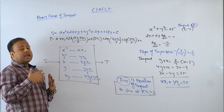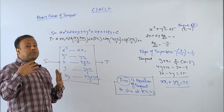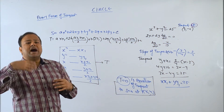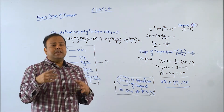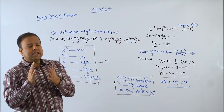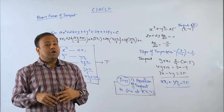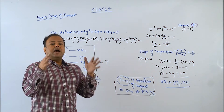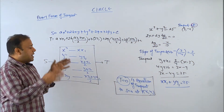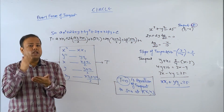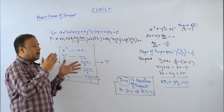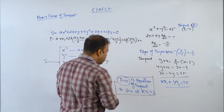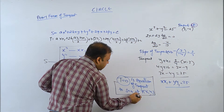Where this comes from, why it works, how it is derived — for that you have to watch another video which I will make afterward, in the context of polars. For now, you have to believe and start using it: the equation of tangent is T = 0.